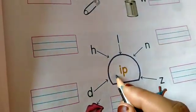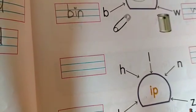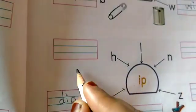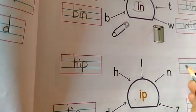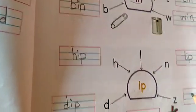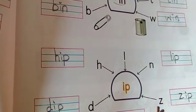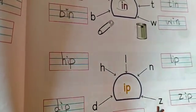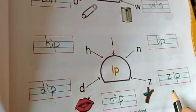Next, with I p. D I p, dip. H I p, hip. L I p, lip. Z I p, zip. N I p, nip. Dip, hip, lip, zip, nip.